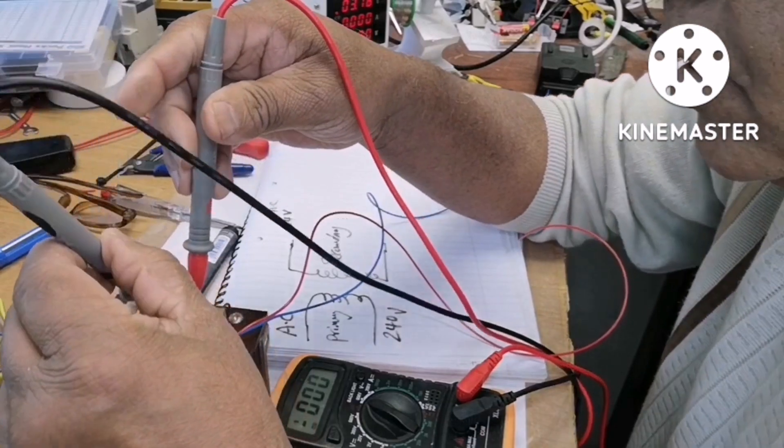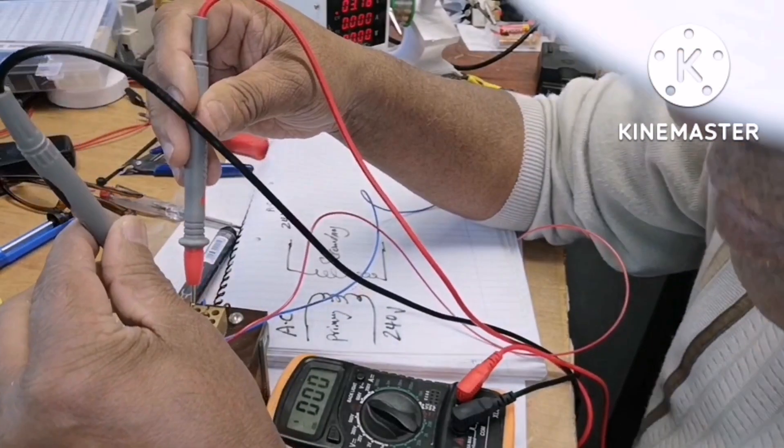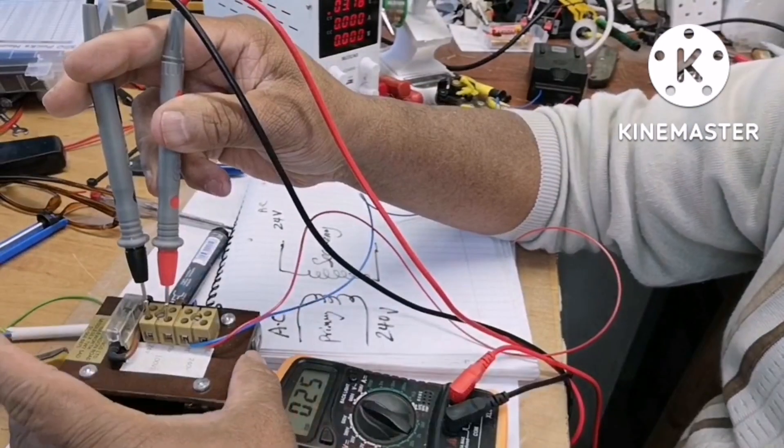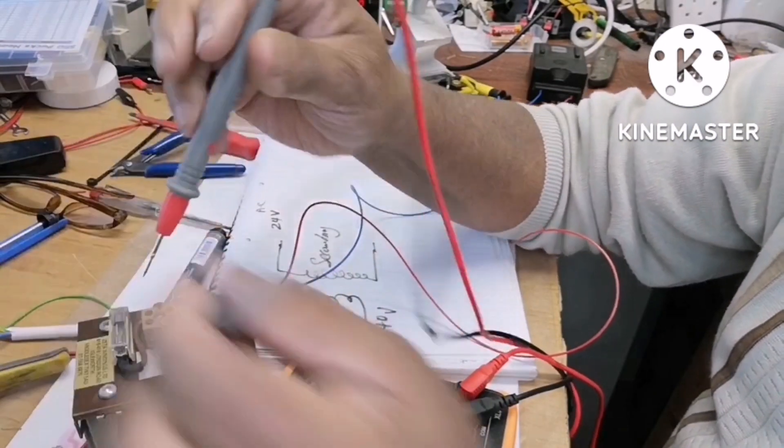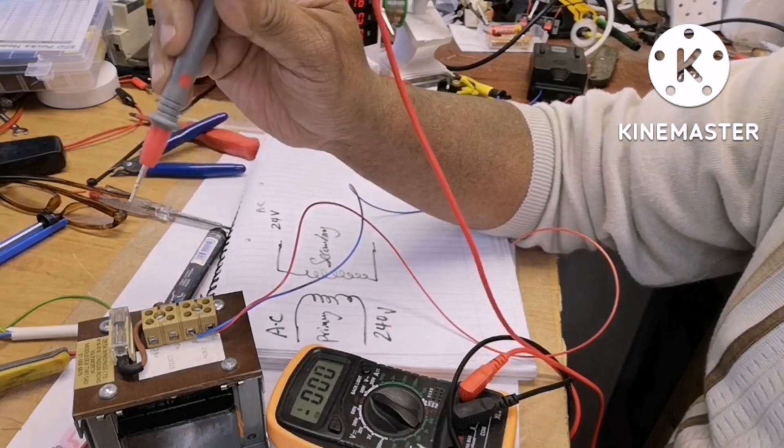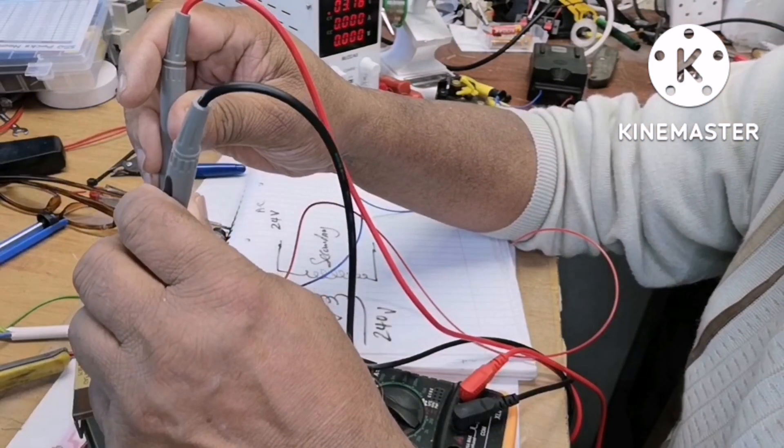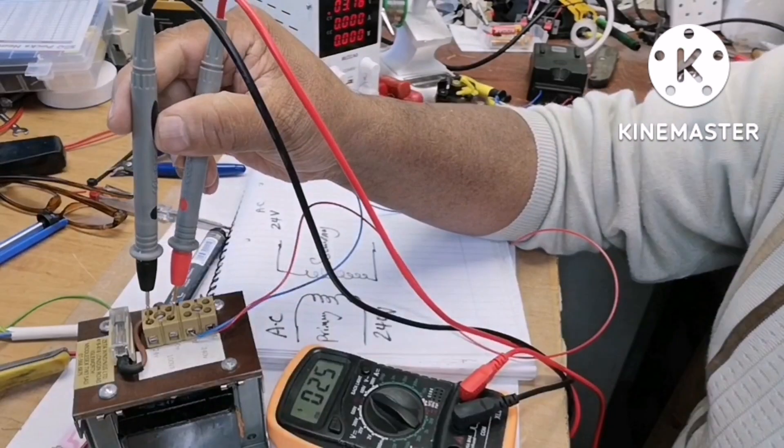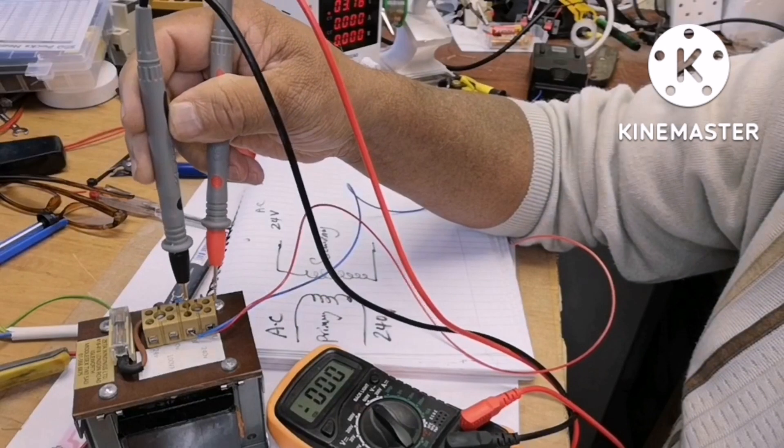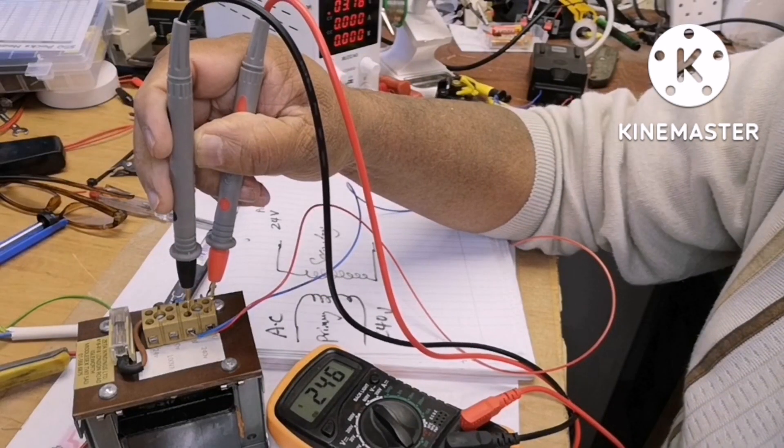On the secondary side, it's 24 volts AC. As you can see, it's slightly higher because there's no load. The simple principle of the transformer is to transform higher voltage into lower voltage.